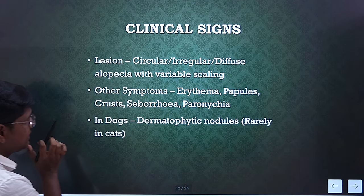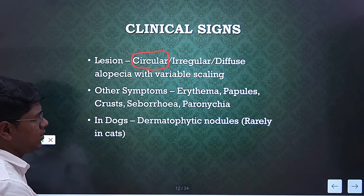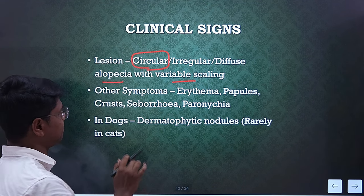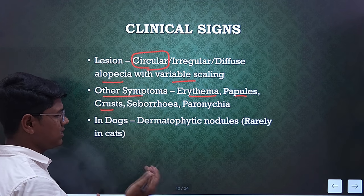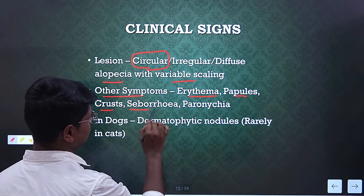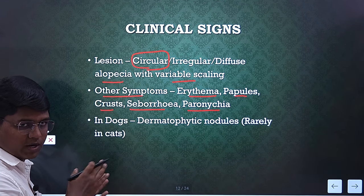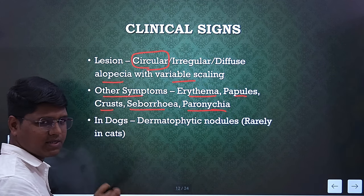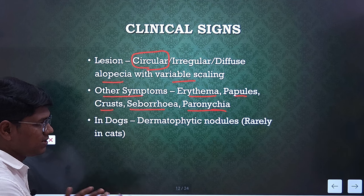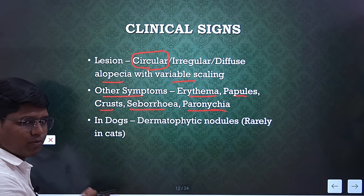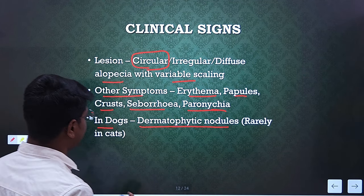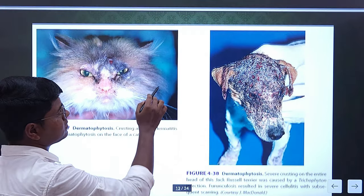The clinical signs: the lesion is very characteristic — you will find circular patches of alopecia, but you may also find irregular and diffuse alopecia with variable scaling. Other symptoms include erythema, papules, and crusts. Seborrhea and paronychia are also seen, similar to Malasseziasis, but there are some basic differences. In case of dogs, you will find dermatophytic nodules. In cats, you may not find them, but in dogs, dermatophytic nodules may be confused with papillomas. We will see how to differentiate.